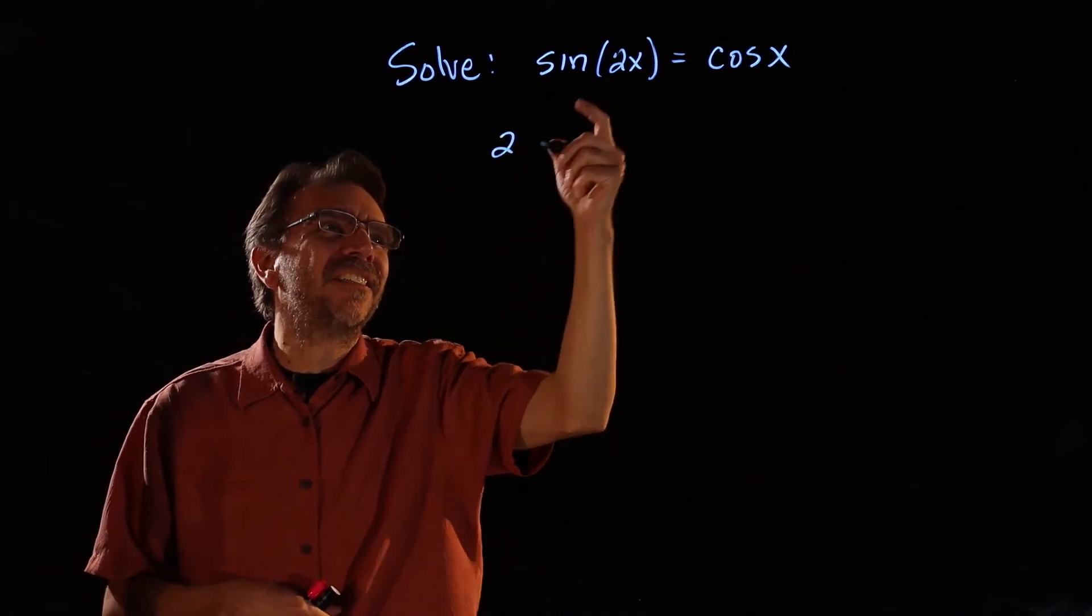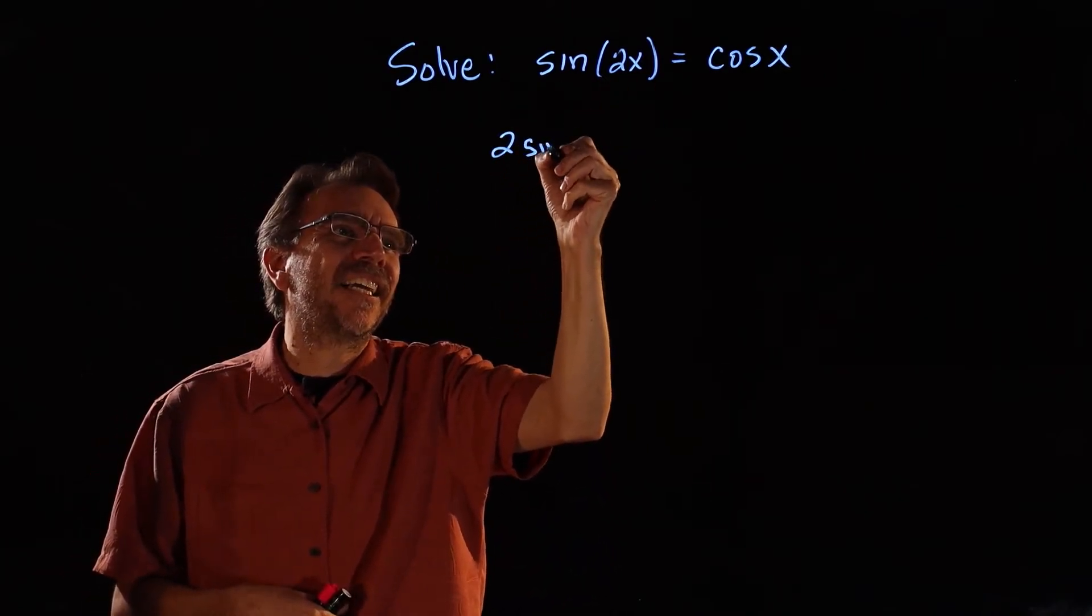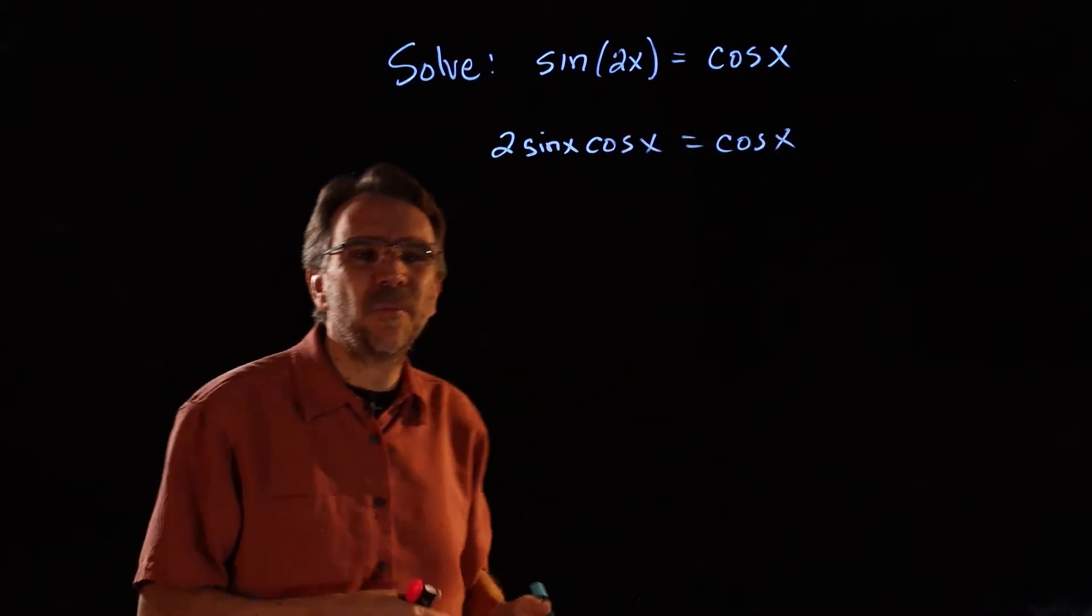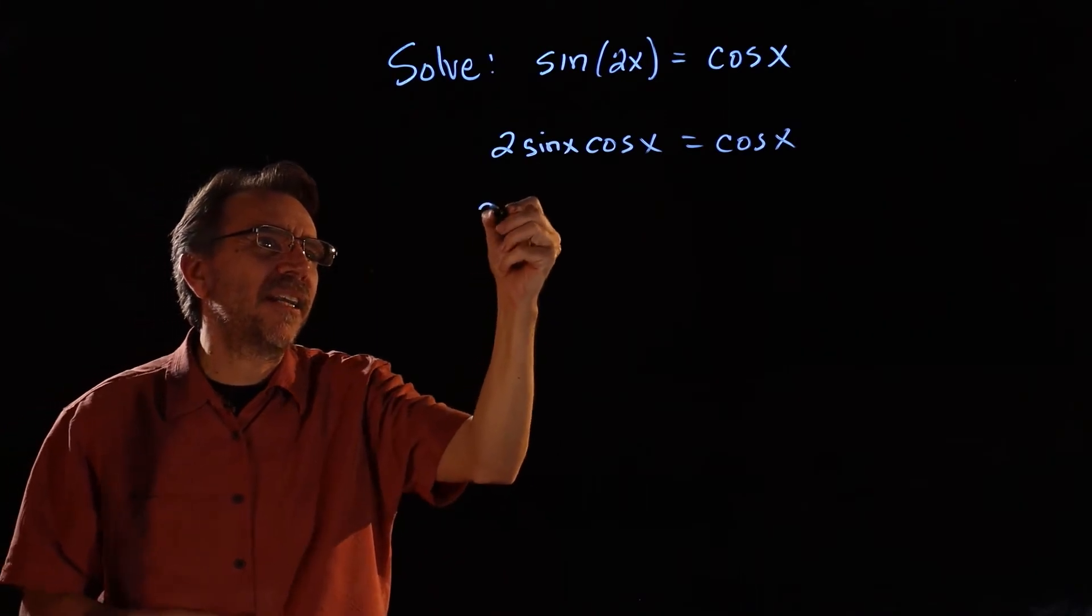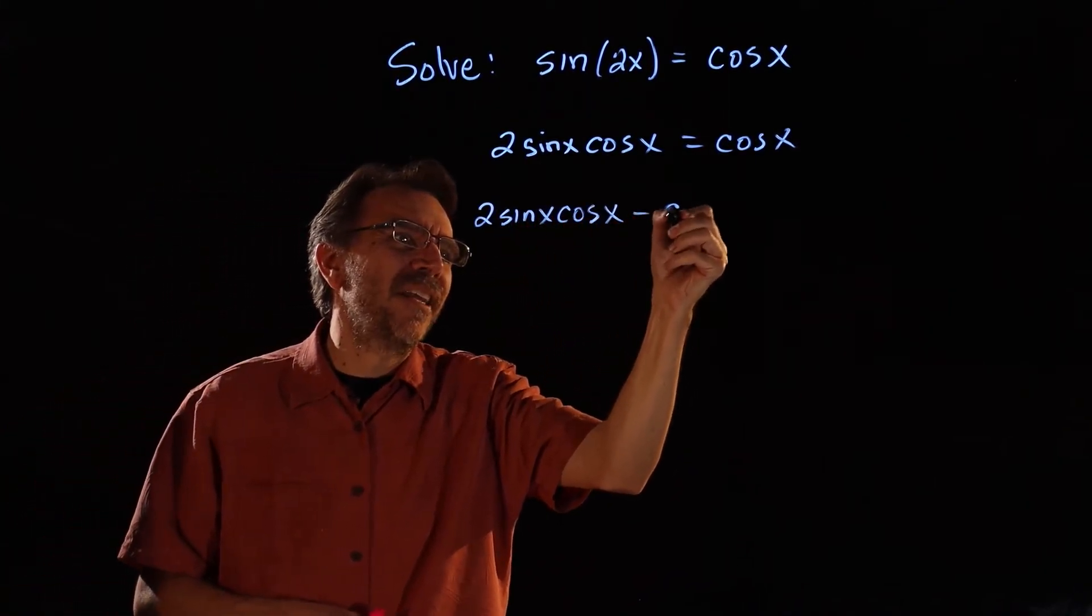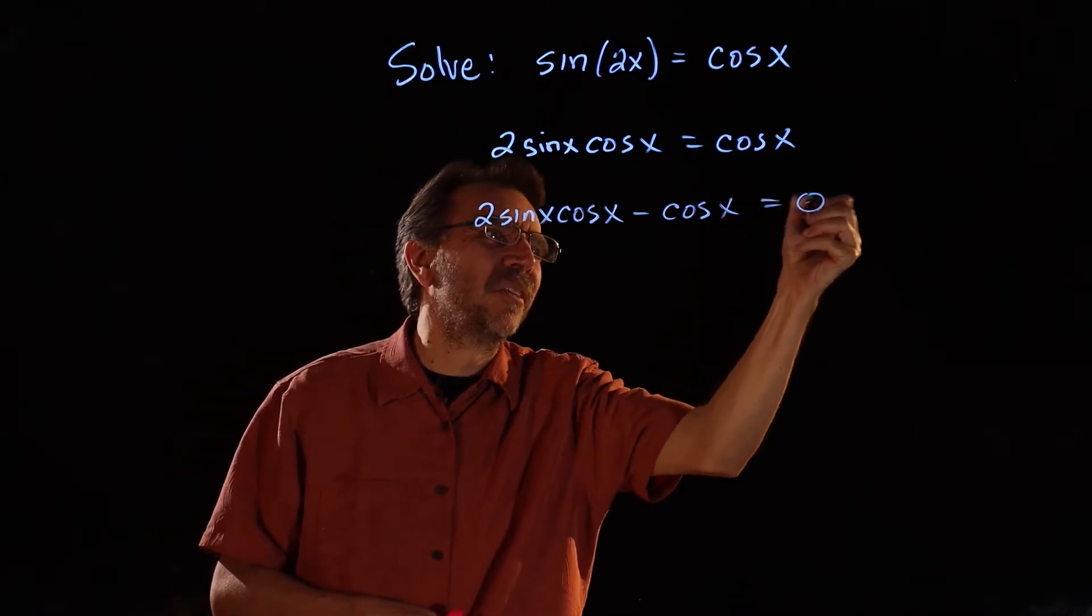So we have sine 2x is equal to 2 sine x cosine x, and that's going to be equal to cosine x. Now I'm going to get all the terms on the same side, 2 sine x cosine x minus cosine x, and that will be equal to 0.